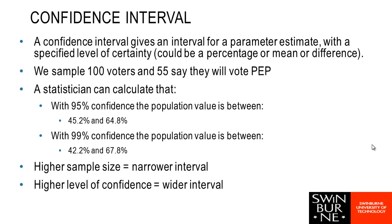If we want to be more sure — say 99% confident instead of 95% — the interval gets wider: instead of 45.2% to 64.8%, it becomes 42% to 67.8%. To be more sure, the interval needs to get wider. Sample size also affects interval width: as sample size gets bigger we have more faith in our estimate and the interval gets narrower. A confidence interval based on 500 voters would be narrower than one based on 100 voters.